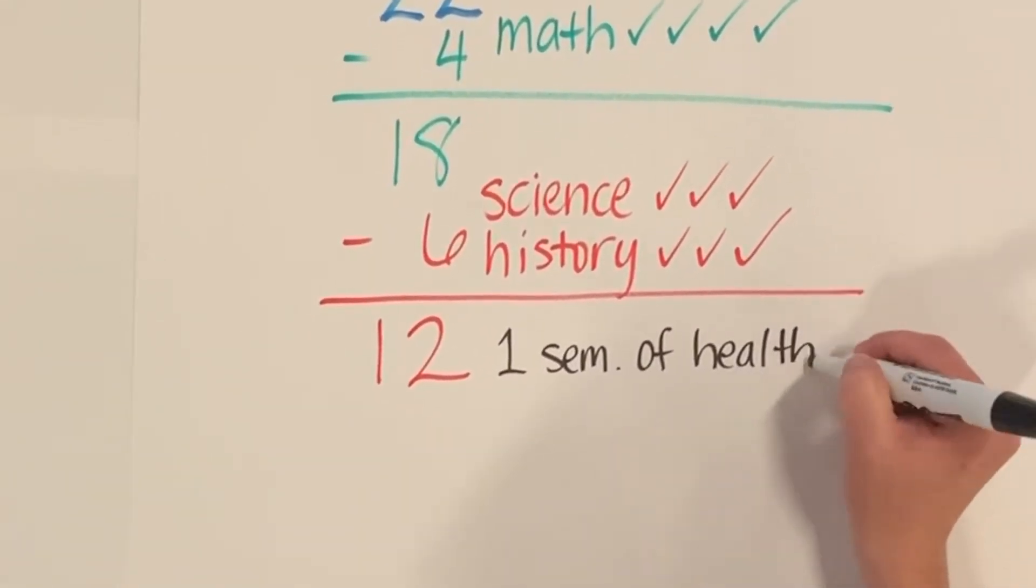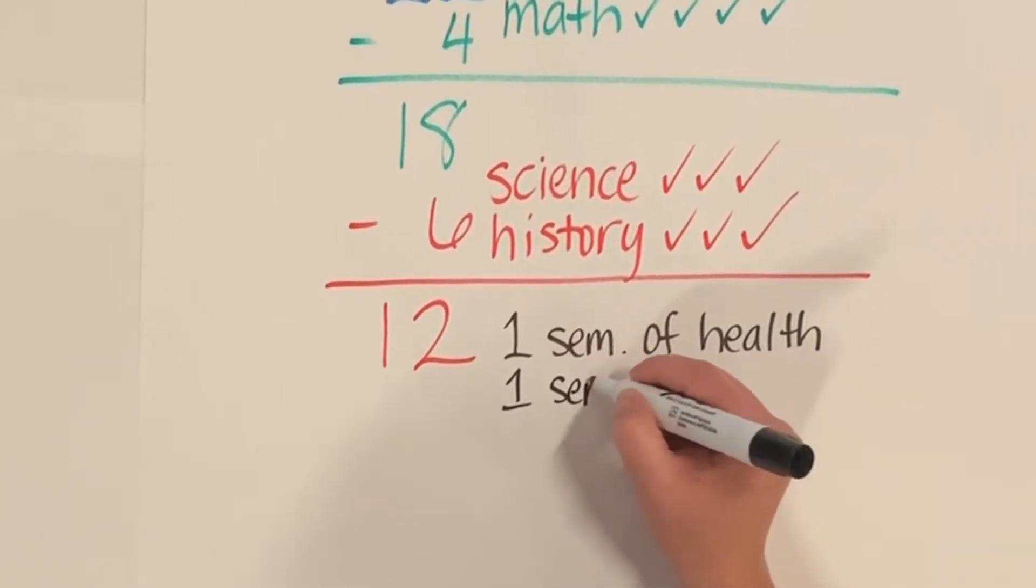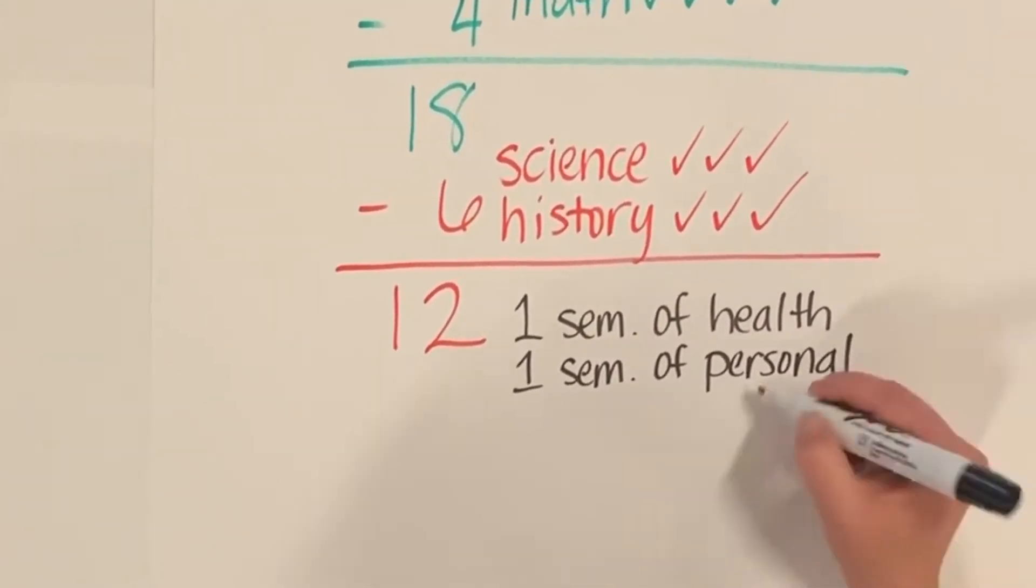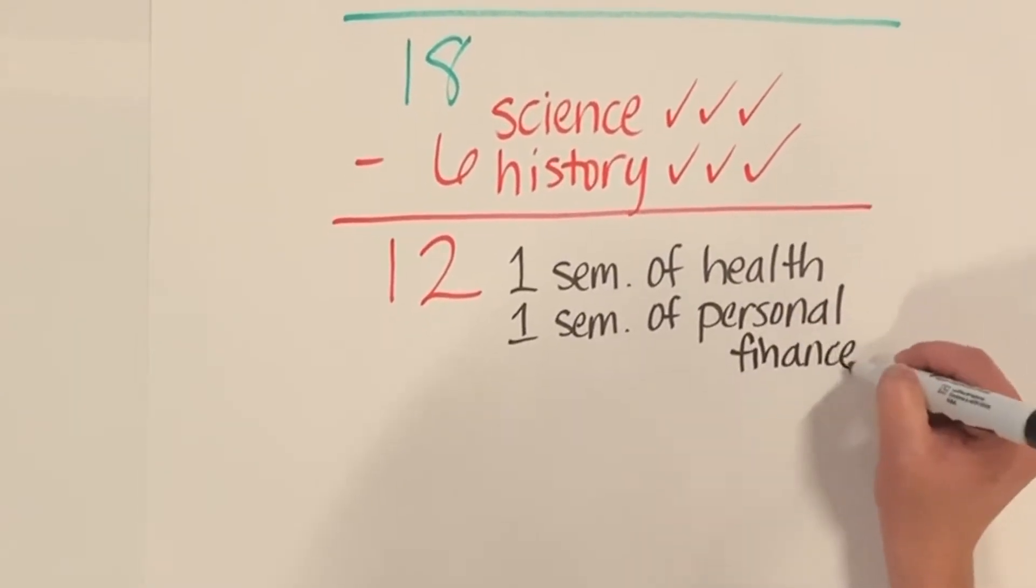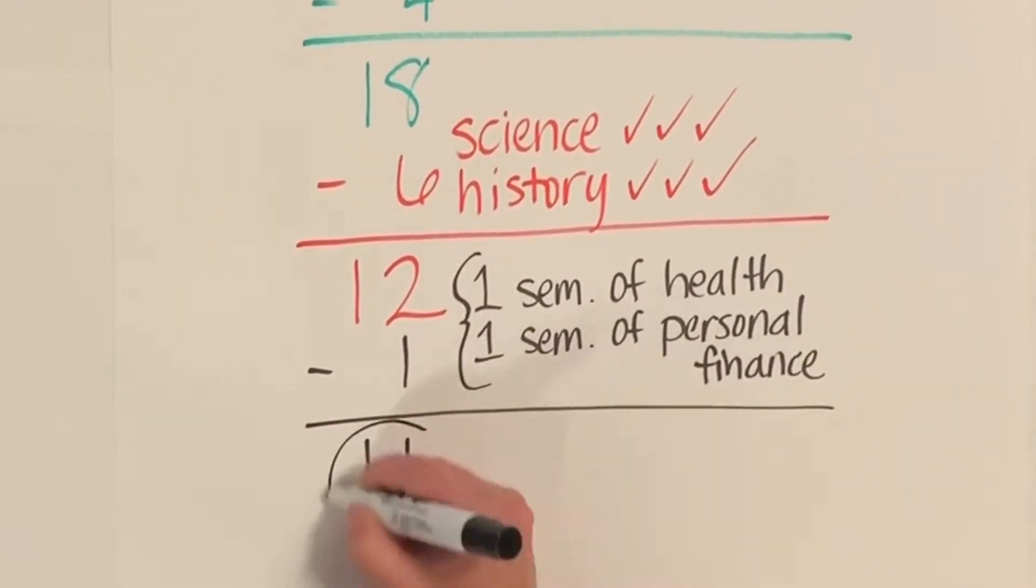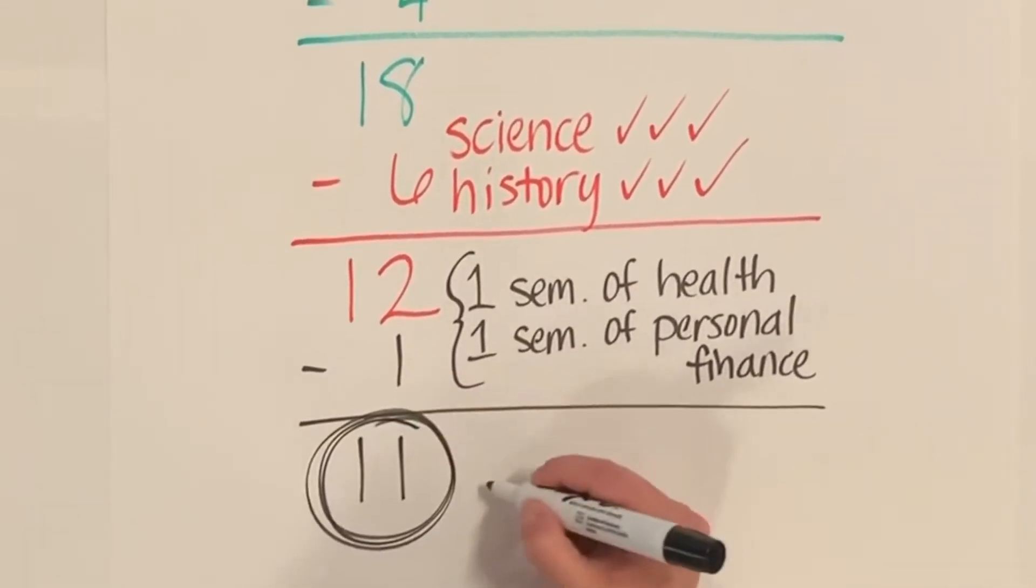Now you're only down to 12 more credits needed to graduate. You're required to take 1 semester of health and 1 semester of personal finance. A semester class is worth a half credit. A year-long class is worth a full credit. That's only 11 more credits you need.